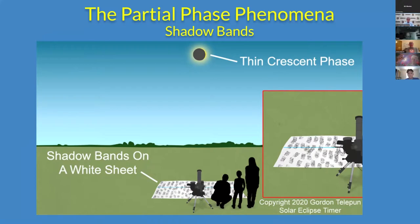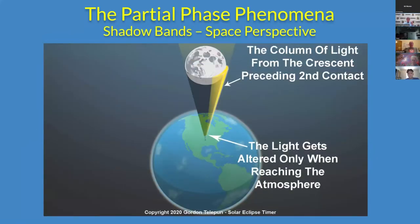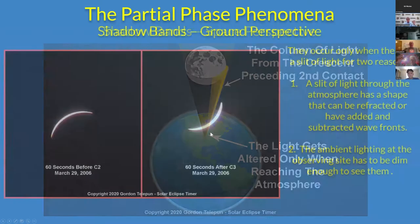The final partial phase phenomenon is shadow bands. Shadow bands are the fine, low-contrast gray shadows that can be projected onto the surface of the earth when there's a fine crescent. You have to realize what's happening from the space perspective: when the moon is blocking most of the sun, you have this column of light going around the side of the moon and coming to earth. Out in space, nothing happens to it — it doesn't get perturbed at all. But when it hits the atmosphere, that's when it can get altered to make shadow bands.